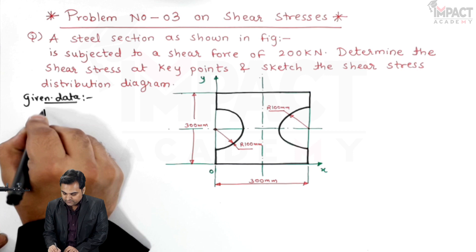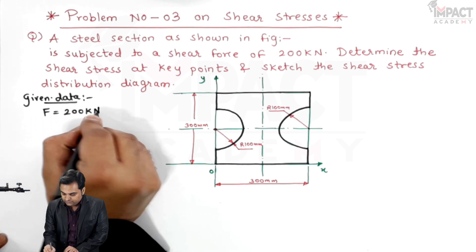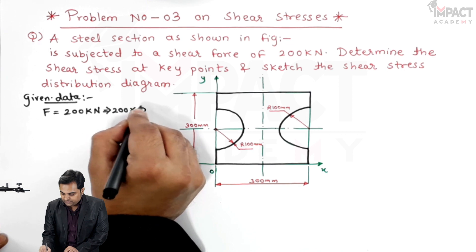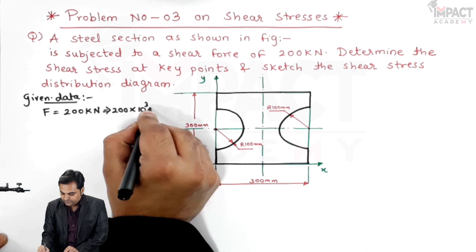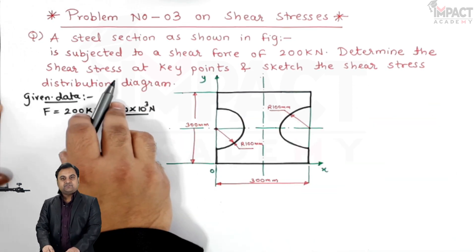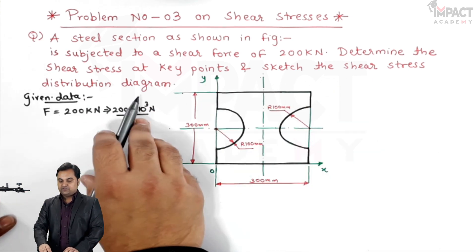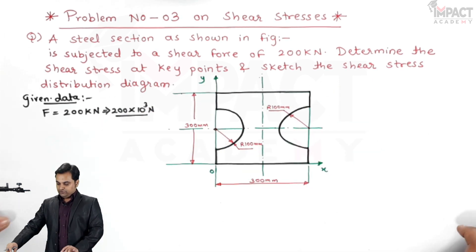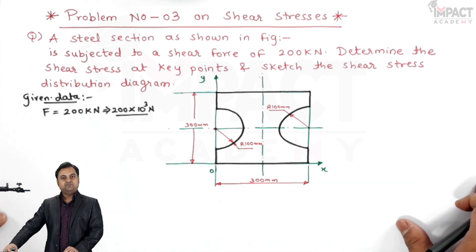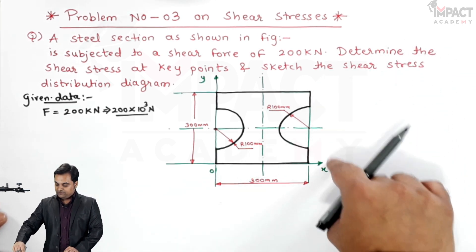The data is: shear force is 200 kilo Newton, that is 200 into 10 raised to 3 Newton. We need to determine the shear stress at key points and sketch the shear stress distribution diagram. For this cross-section of the beam we have to plot the shear stress distribution along the depth.